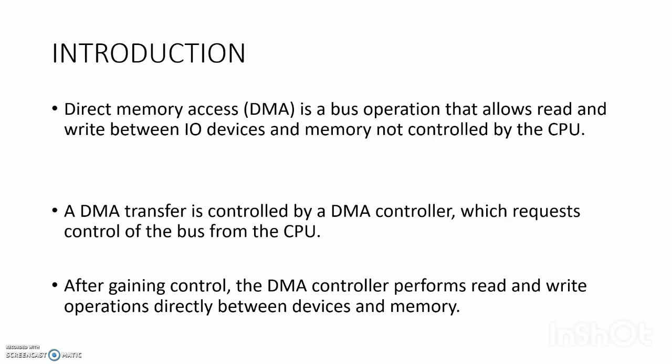The memory bus is controlled by a DMA controller — that is the most important thing. Memory transactions take place without the intervention or control of the CPU. The CPU will be doing other operations at this time, while the DMA controller handles these transactions. DMA is a bus operation that allows read and write between I/O devices and memory, not controlled by the CPU — it is controlled by the DMA controller, which requires control of the bus from the CPU.